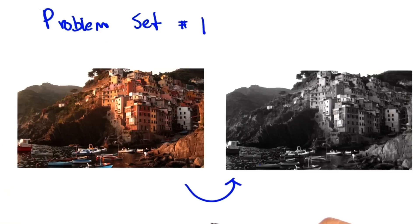Welcome to Problem Set Number 1. I'm Chen Han and I'm your TA for the class. Today I will be walking you through Problem Set Number 1. For this problem set, our goal is to convert an image from color to black and white.